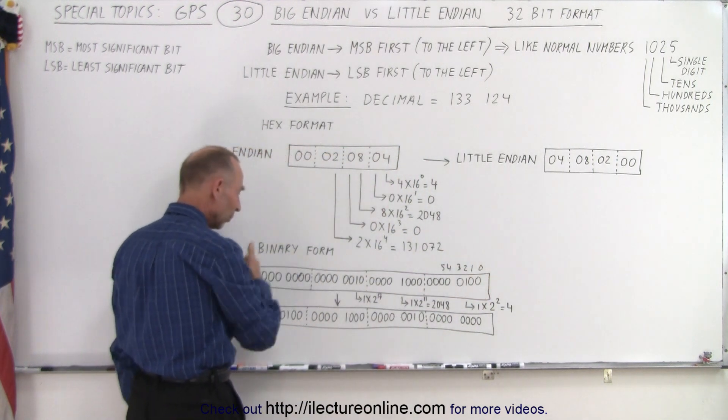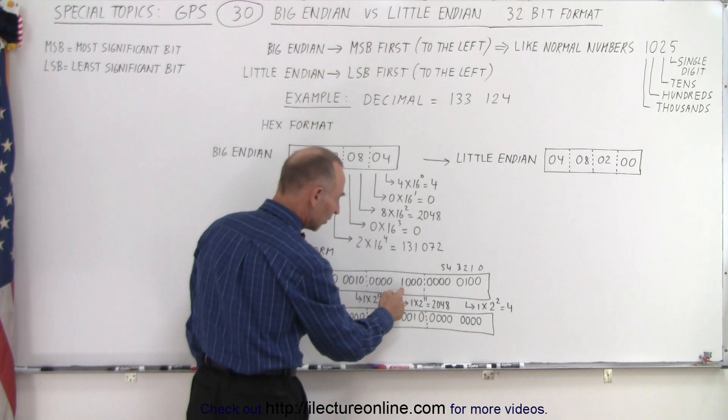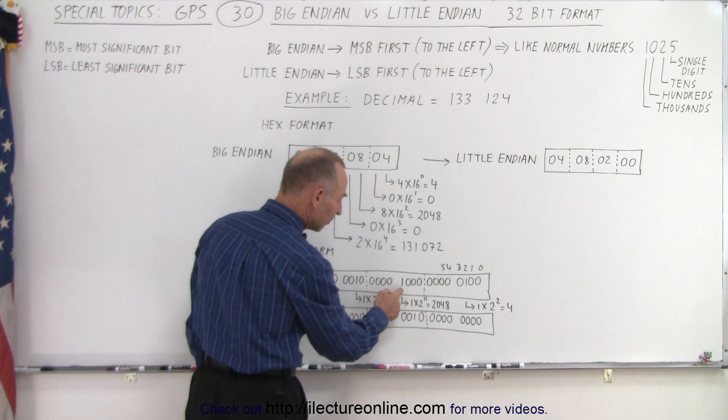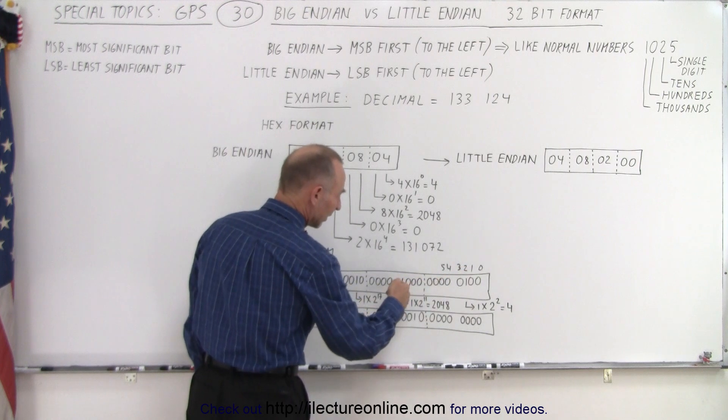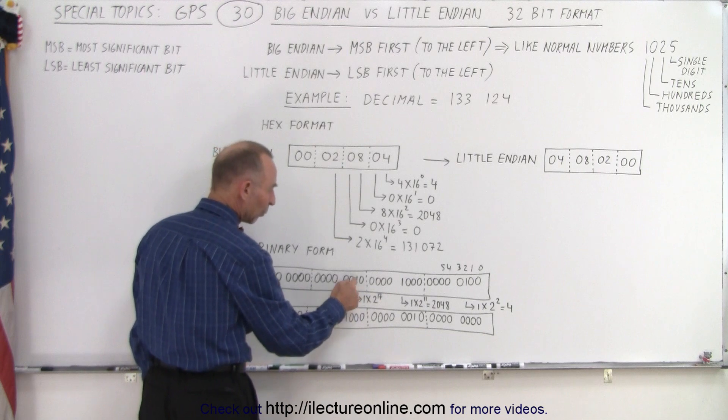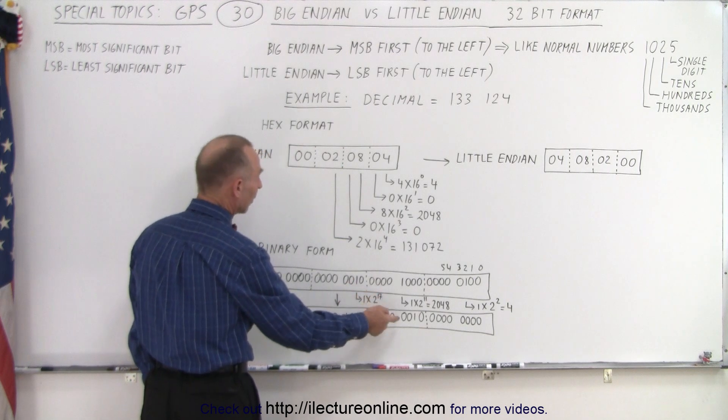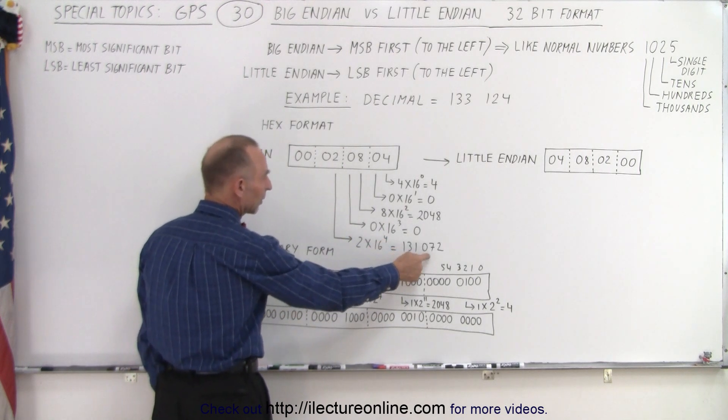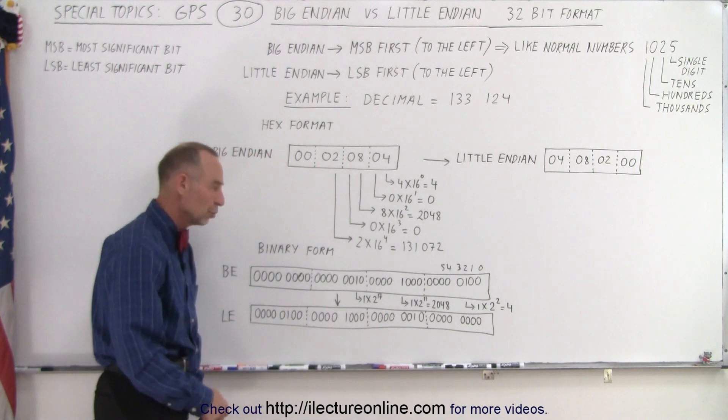From least significant bit to most significant bit. So here this is in the 11 bit position that's the 12th bit in a row. So this is one times two to the 11th power which is 2048. And here we have one times two to the 17th power which is 131,072.